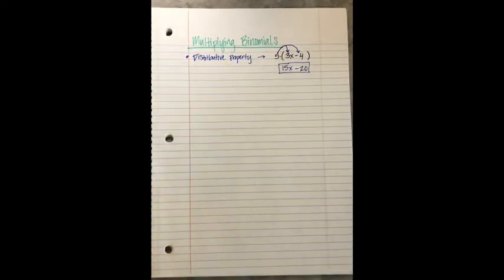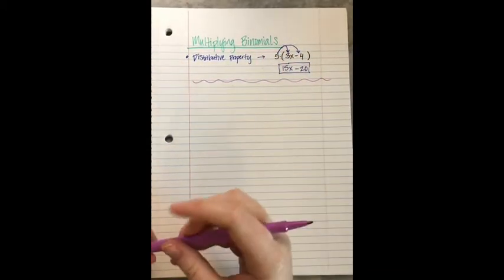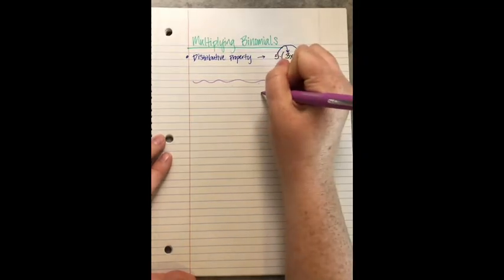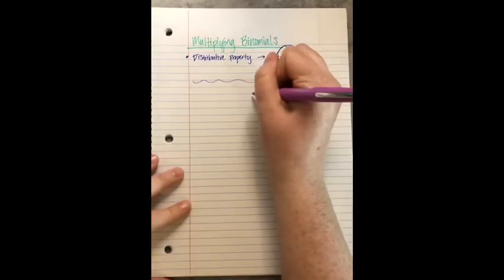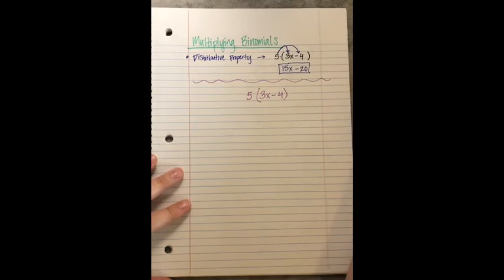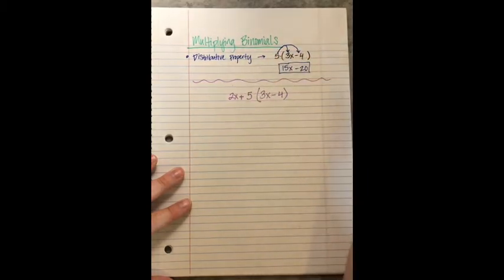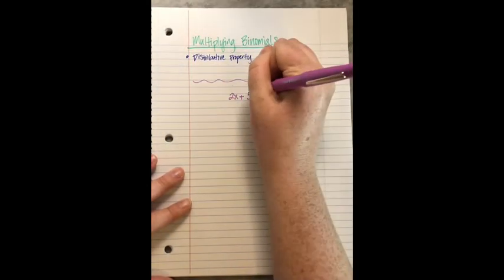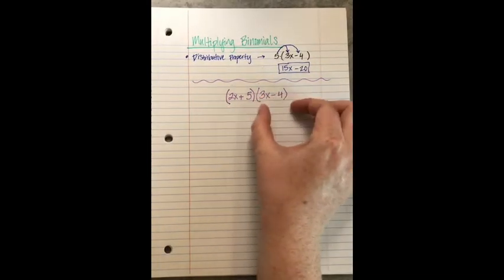We're going to expand on that idea. This week you're going to see something like this: keep that set of parentheses with 3x minus 4, but instead of just having a 5 in front of it, you actually have a 2x plus 5. We're going to group the 2x plus 5 together in parentheses, so now you have two sets of parentheses next to each other — and that means multiplication.